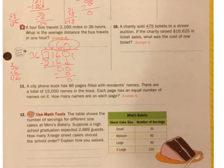A charity sold 475 tickets to a dinner auction. If the charity raised 16,625 in ticket sales, what was the cost of one ticket? So we got to take the total cost divided by the number of tickets sold. And then we'll find out what it is for each ticket. So 475 doesn't go into 1, doesn't go into 16, but it does go into 1,662. Now, this is almost 500, so I'm going to say 3. So 475 times 3, 1, 5, 21, 22, 12, 13, 14.